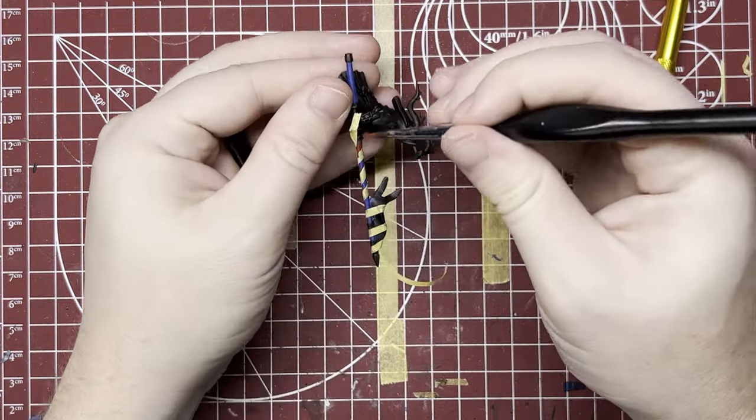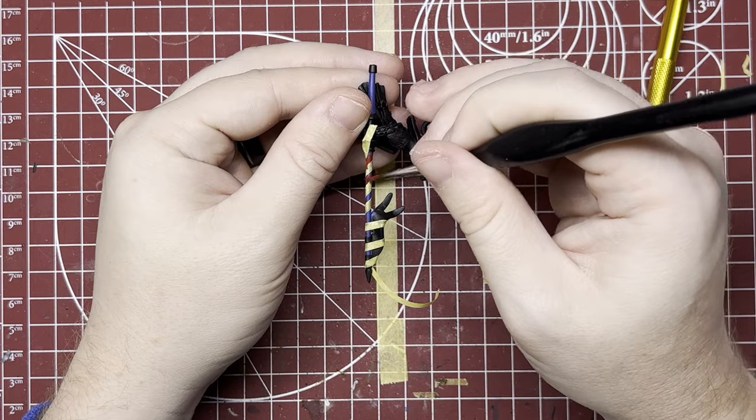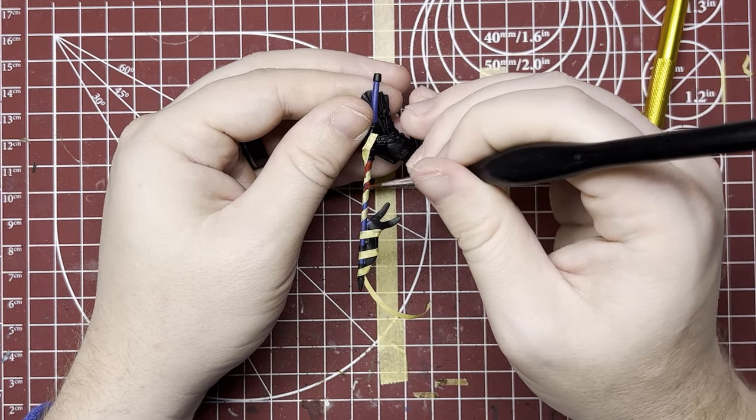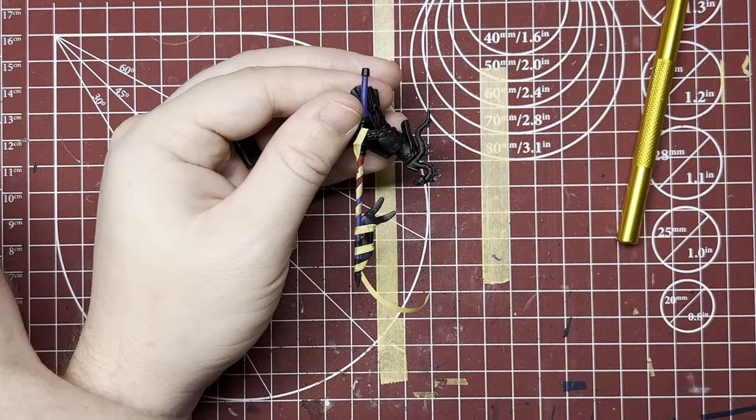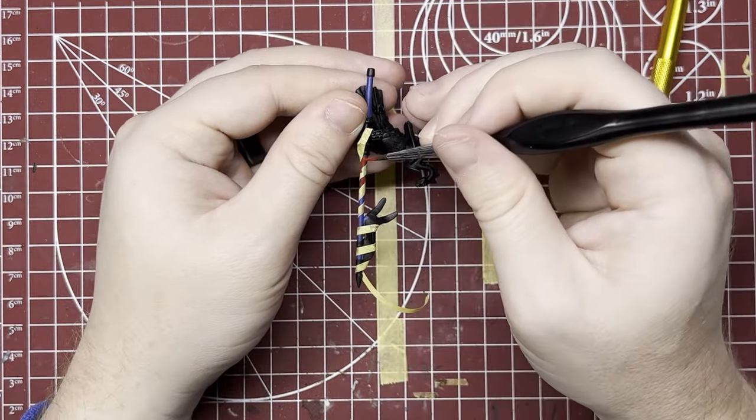We can just do this by quarter turns. We turn a little bit, we paint everywhere we see the blue color. We do another corner turn and repeat until the full lance is painted.